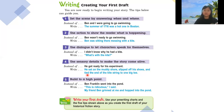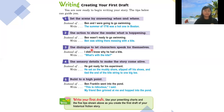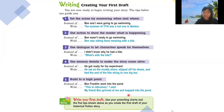Tip five: build to a high point. This means you use all of the previous tips together to build toward that climactic moment in your story — including dialogue with quotation marks and all the other techniques. There's also a challenge for you: use these tips to write your own first draft!